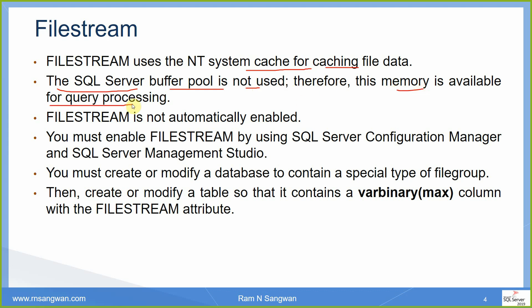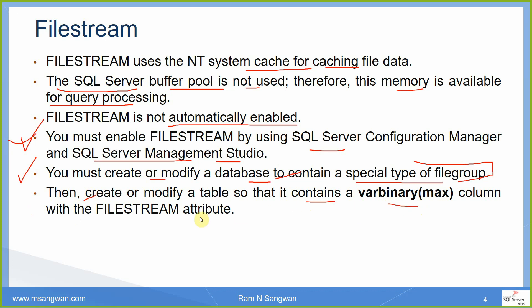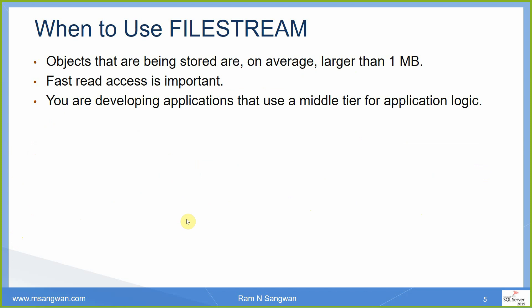FileStream is not automatically enabled — as demonstrated, it is disabled by default. You must enable FileStream using Configuration Manager and SQL Server Management Studio. You must then create or modify a database to contain a special type of file group for FileStream. So the sequence is: first enable it, then tell the database it will have FileStream or unstructured data, and then create or modify a table so it contains a VARBINARY(MAX) column with the FileStream attribute. That is a three-step process.